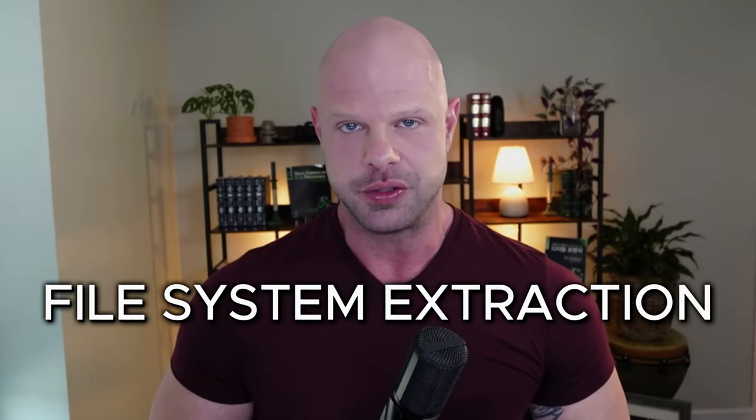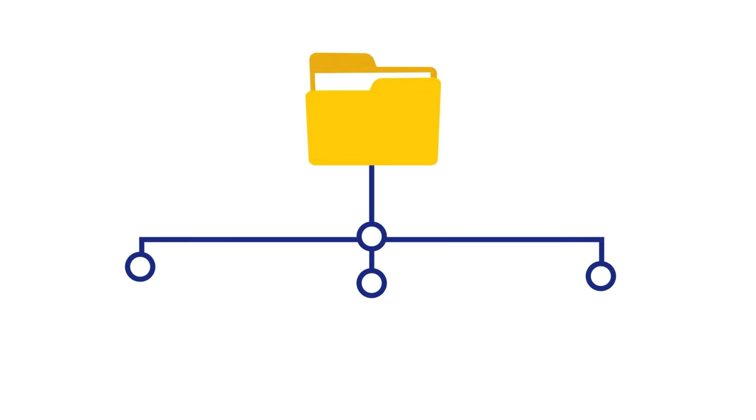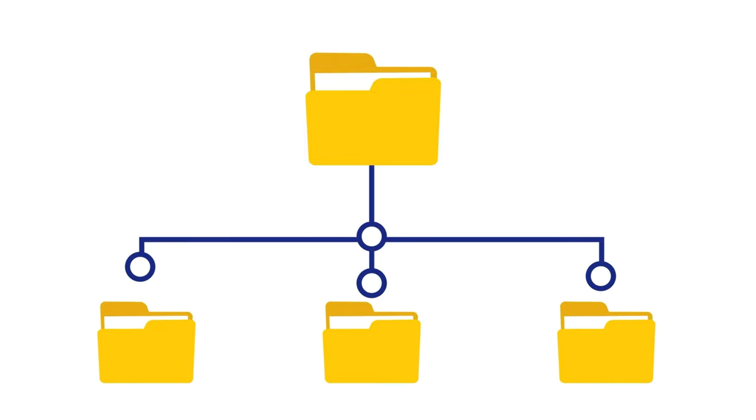Next up, we have a file system extraction. Unlike a logical extraction, with a file system extraction you don't need to use that API — that application programming interface. Instead, you are able to get access to the storage memory of the phone itself. When that happens, you're able to get databases and other information you're not going to get with a purely logical extraction. A file system extraction gets all the data you'd get from the logical, plus more. Those databases are rich repositories of data, including potentially deleted data because of how databases work on cell phones.